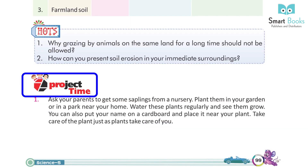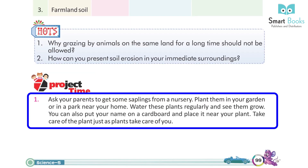Project time: Ask your parents to get some saplings from a nursery. Plant them in your garden or in a park near your home. Water these plants regularly and see them grow. You can also put your name on a cardboard and place it near your plant. Take care of the plant just as plants take care of you.